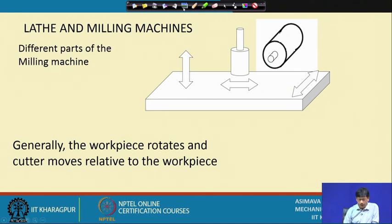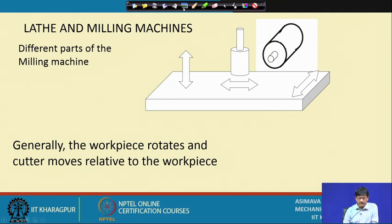The column gives structural support to all the cutters and provides rotational motion. The column is at the back giving support to the main machine, and all kinematic connections are through the column. The knee supports the table.